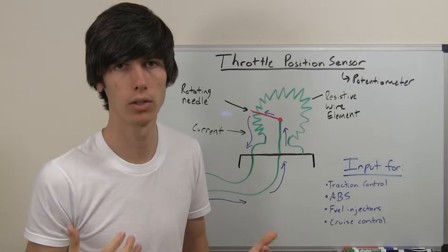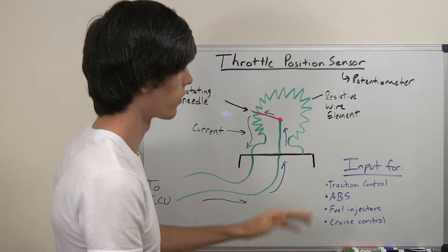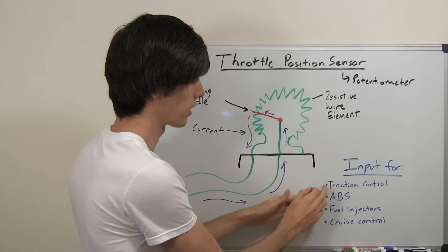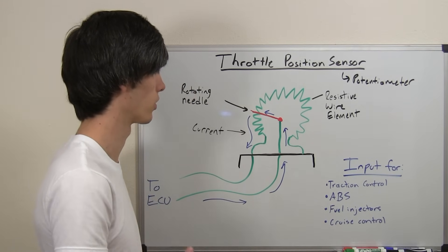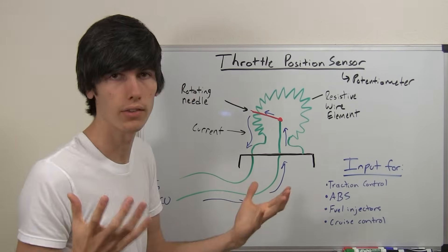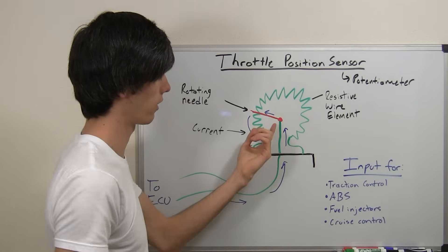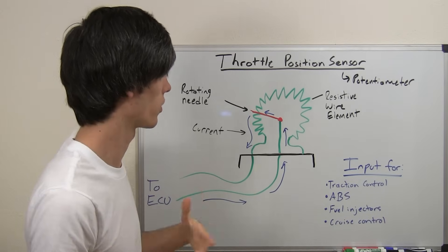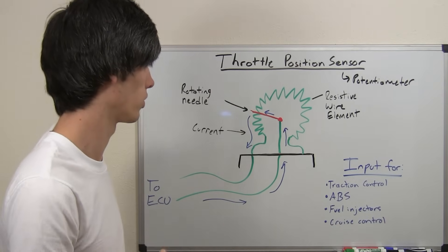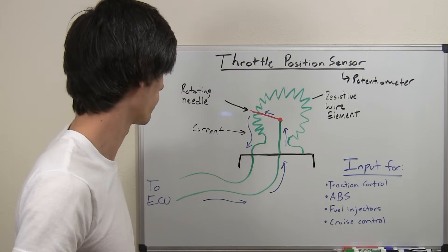And the ECU is going to measure that voltage change and use that input for various functions. Some of the things that it will be used for include traction control, ABS, fuel injectors, and cruise control. And so, it's a very simple idea, and it's just, you add more resistance, and that resistance change is a measurement that's useful for the ECU to know how to add more fuel or use less fuel, and when engaging other items such as these listed here.